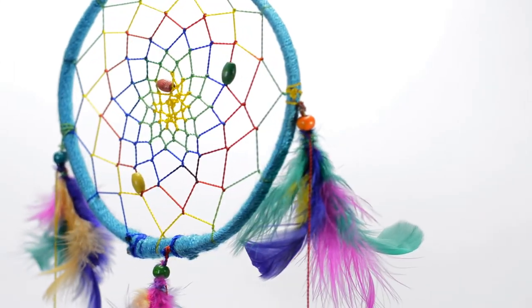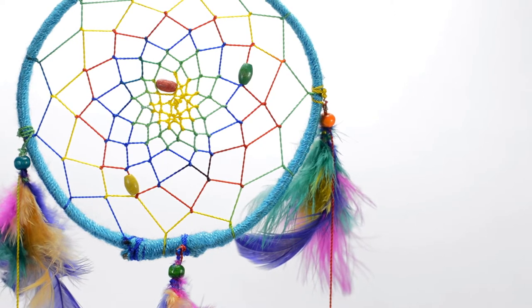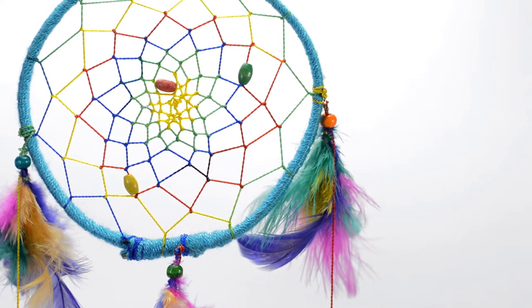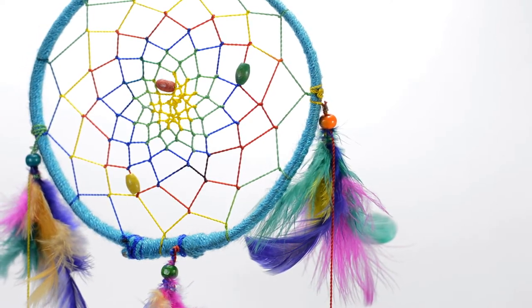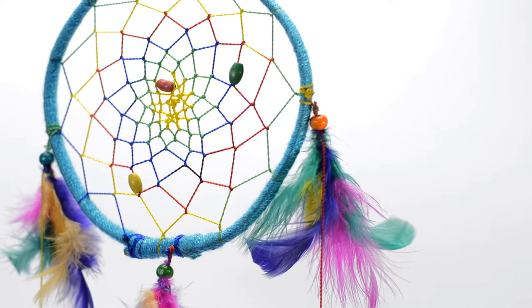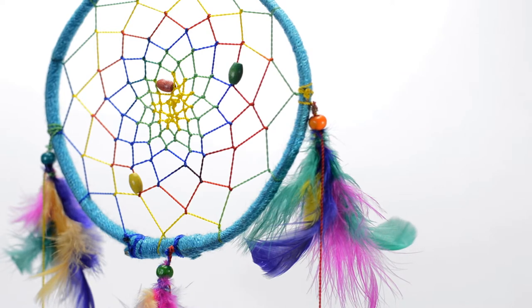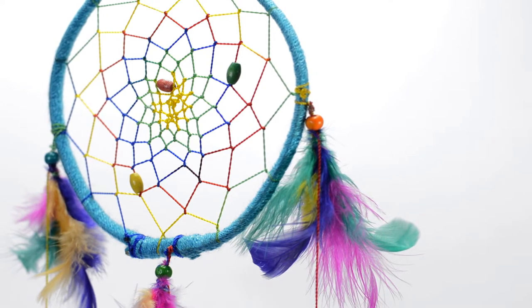So the dreamcatcher originated from the Native American Chippewa tribe. They were based off a legend of the spider woman who took care of children and people of the tribe. They were made from many natural materials including feathers. Owl feathers were used to bring wisdom and eagle feathers were used to bring strength and courage. The purpose of a dreamcatcher is to catch all of the bad dreams inside the web.